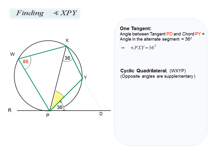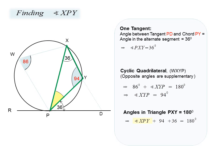From our second observation that WXYP is a cyclic quadrilateral, opposite angles are supplementary. Therefore angle Y plus angle W equals 180 degrees, giving angle Y as 94 degrees. This allows us to quickly find the unknown angle, as angles in a triangle equal 180 degrees, and therefore XBY is equal to 50 degrees.